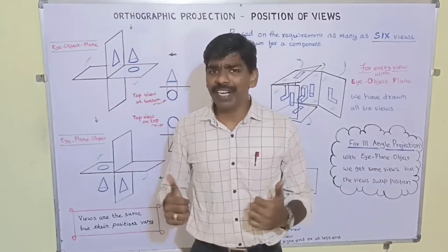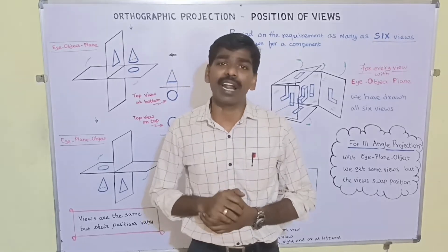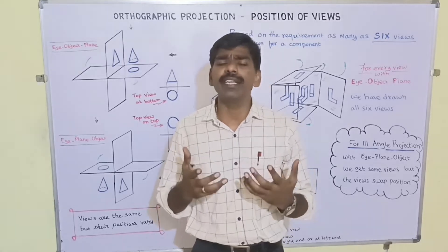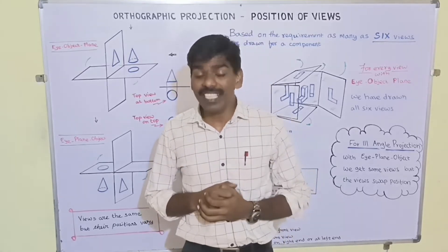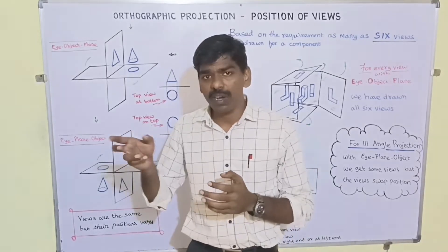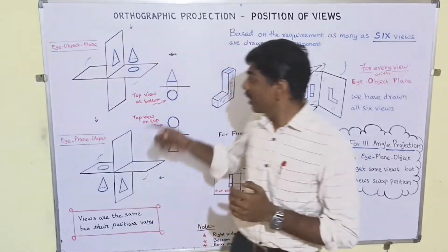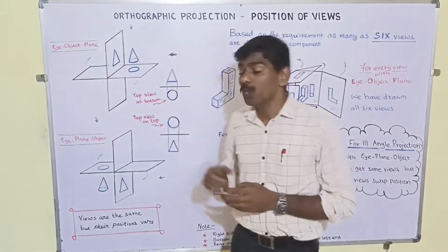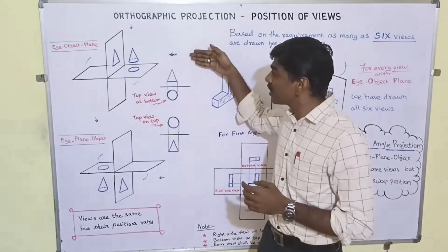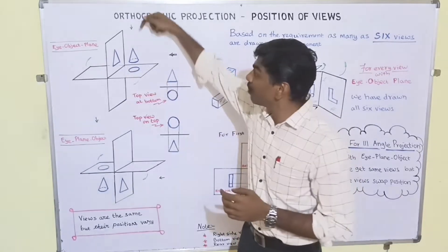In this video we are going to see about positioning of views in orthographic projection. Orthographic projection is a multi-view technique. When we have the object in the first quadrant or third quadrant, we need to create multiple views. Considering first angle projection, the object is held in the first quadrant and the observer looks from this position to get the front view, and from this position to get the top view.